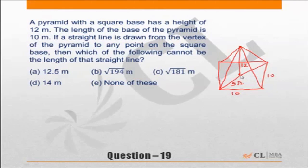The shortest distance from the vertex to the square base is 12 — this is the perpendicular height. The maximum distance will be to a corner of the base. That forms a right-angle triangle, because the base is a square and the height is perpendicular. So the maximum distance is the hypotenuse: square root of (12 squared plus (5 root 2) squared) = square root of (144 + 50) = square root of 194.